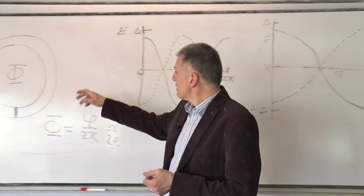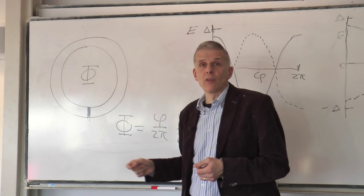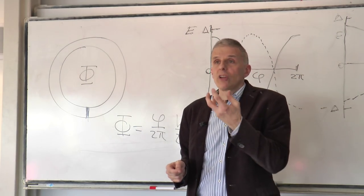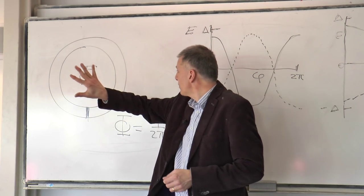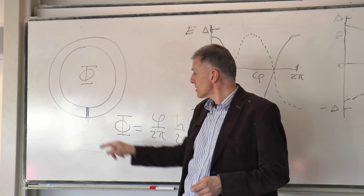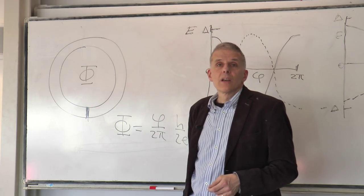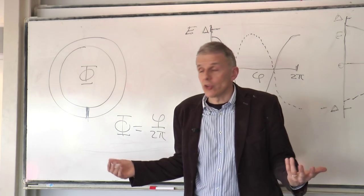And to do that I would like to consider a ring, a superconducting ring, enclosing a flux phi. There is a magnetic field. The ring encloses the flux. There is a little barrier here. This is what we call a Josephson junction.